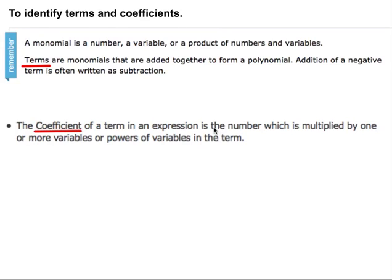Okay, in this video we're going to learn how to identify terms and coefficients. Let's remember that a monomial is a number, a variable, or product of numbers and variables. That means to say that if we have something like 5, 5 is a constant but it's also a monomial.